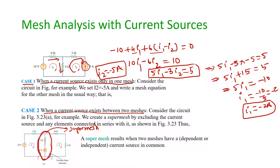At the supermesh, applying KCL at the node: I1 is going away and I2 is entering, giving the KCL equation: minus I1 plus I2 equals 6. This is one equation.